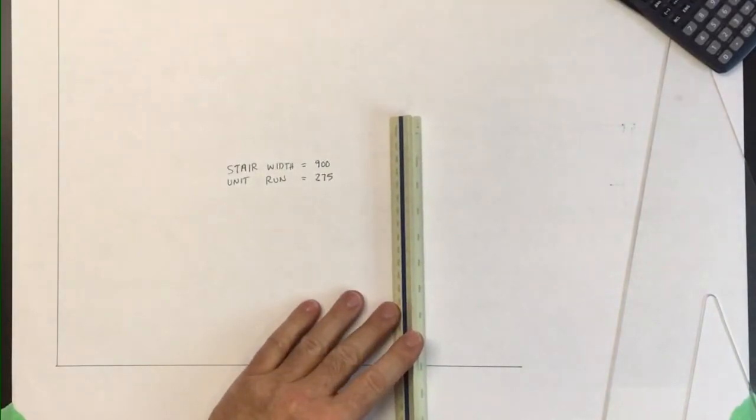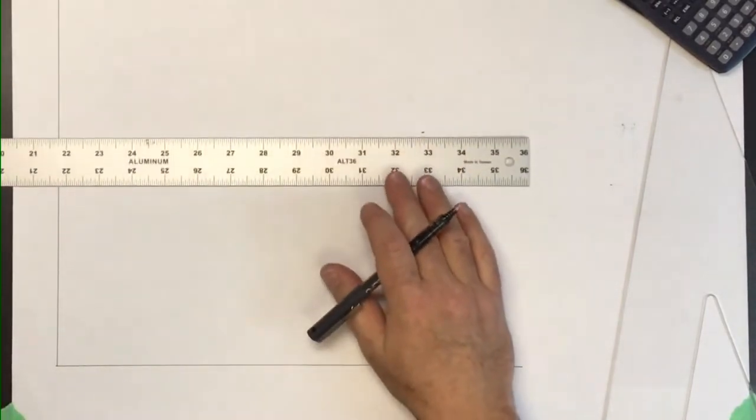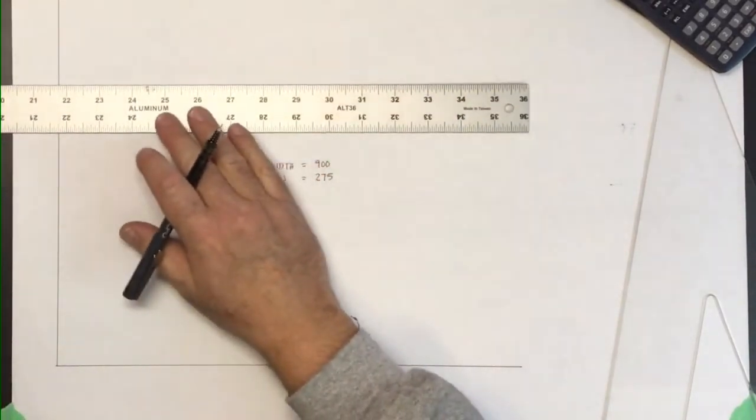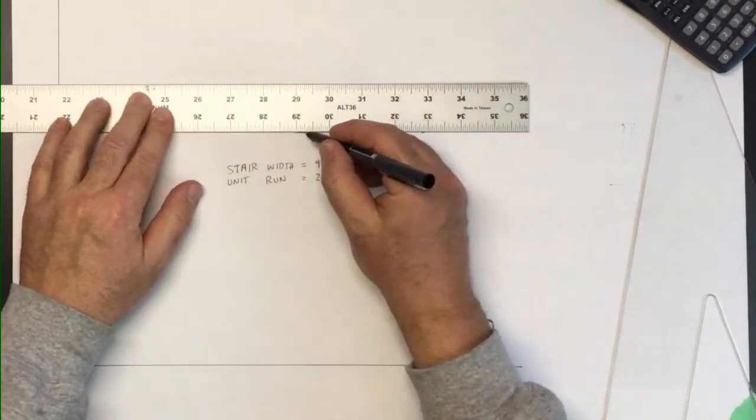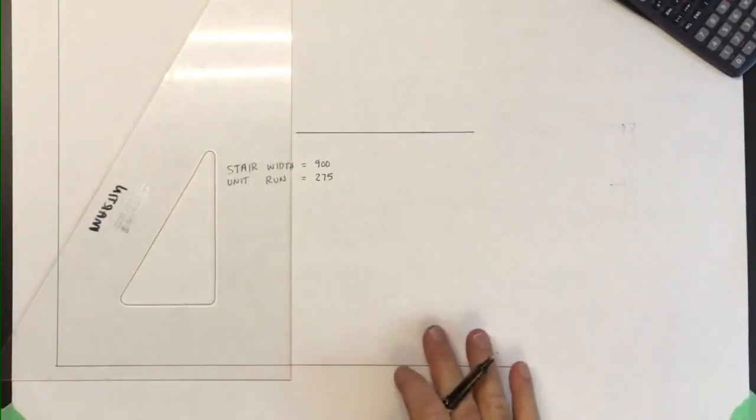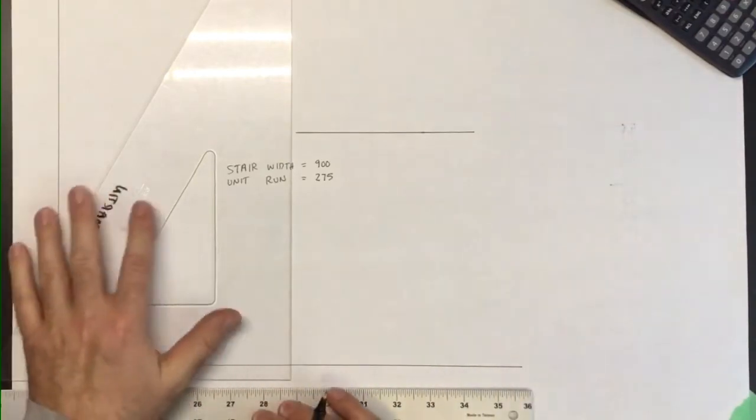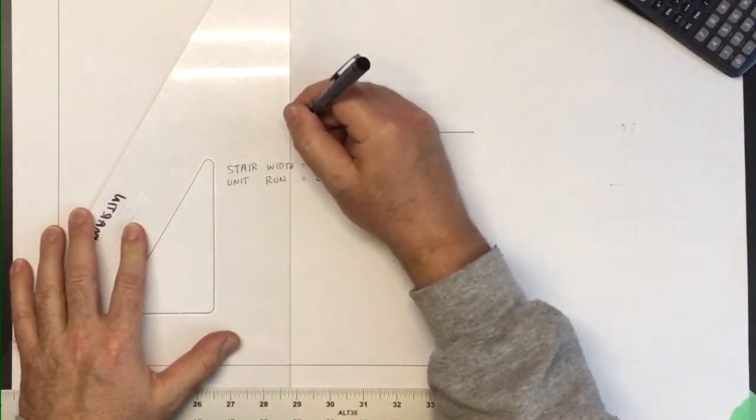I'll just finish off those lines. So that's going to be somewhere around here like that, and then I'll square off for the other one like that.